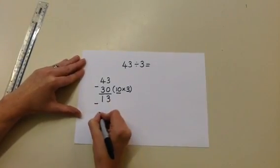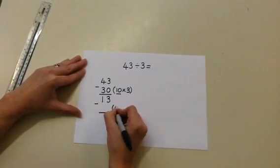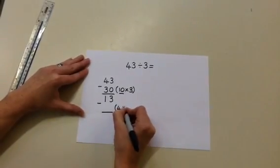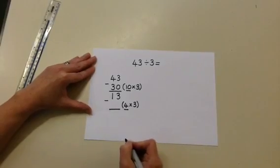And again we're going to subtract groups of 3. Using our understanding of the 3 times table, we're going to work out how many we can take away. 4 groups of 3 is 12, and we can take 12 away from 13.